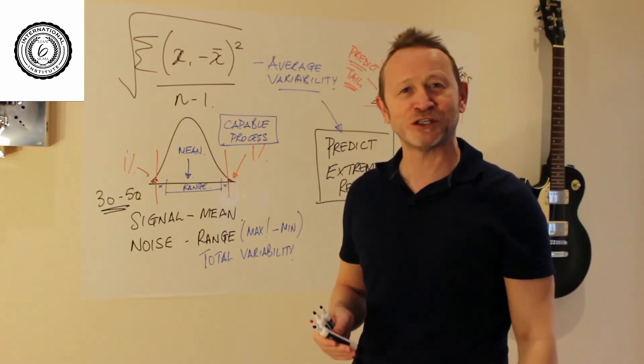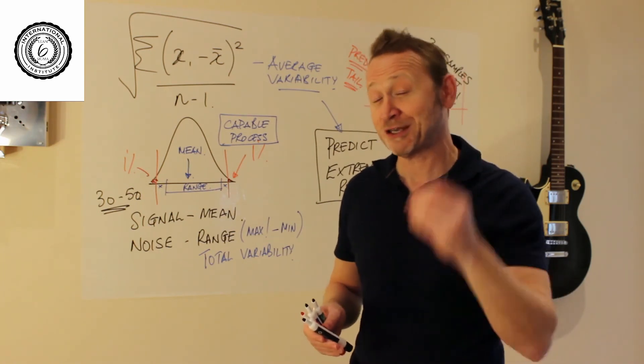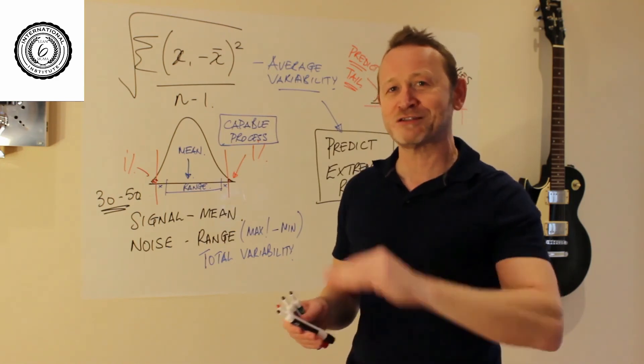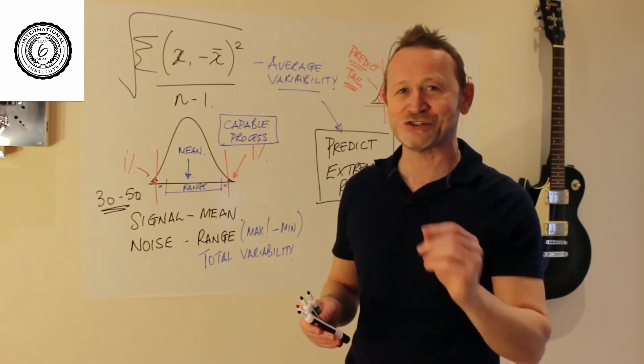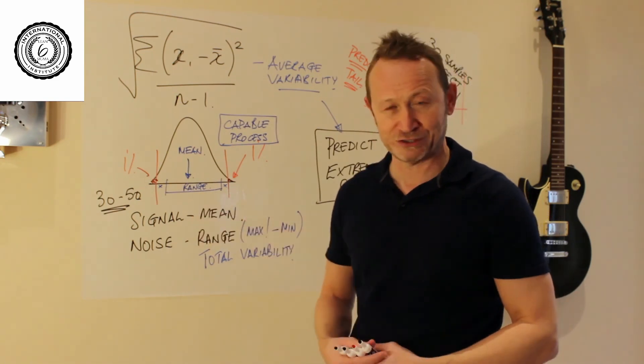That is why we use standard deviation. It is the most brilliant number to know. It has the ability to predict tomorrow. It has the ability to predict defect rates, even when you've seen zero in the sample. The range cannot do that.